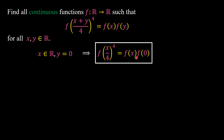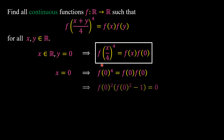By substituting x equal to 0 into the functional equation, we have f(0) to the power of 4 equal to f(0) times f(0). The only numbers that satisfy this equation are 0, 1, or minus 1.